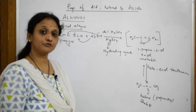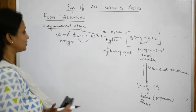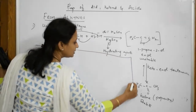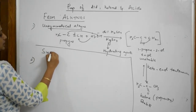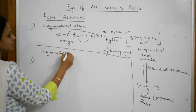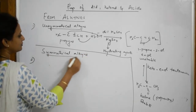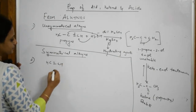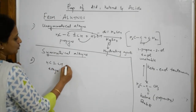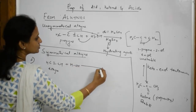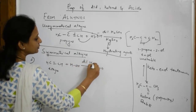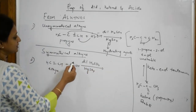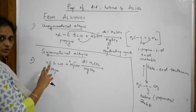Now I have to prepare an aldehyde. For this, I am going to take a symmetrical alkyne. The basic symmetrical alkyne is ethyne — H–C≡C–H. I add water in the presence of dilute sulfuric acid and HgSO₄ as the hydrating agent. Since this is a symmetrical alkyne, there is no preferred order of addition.